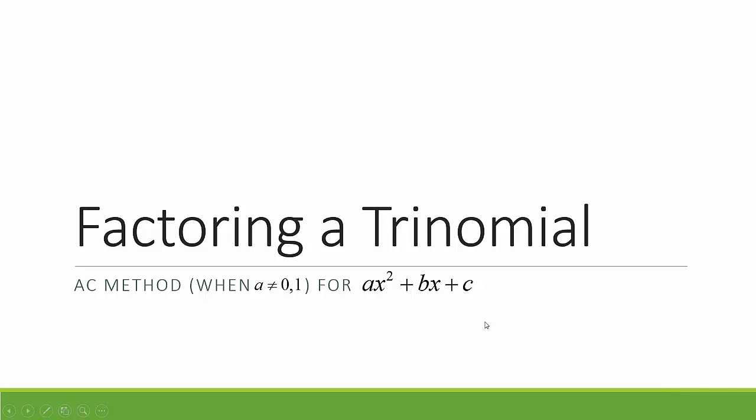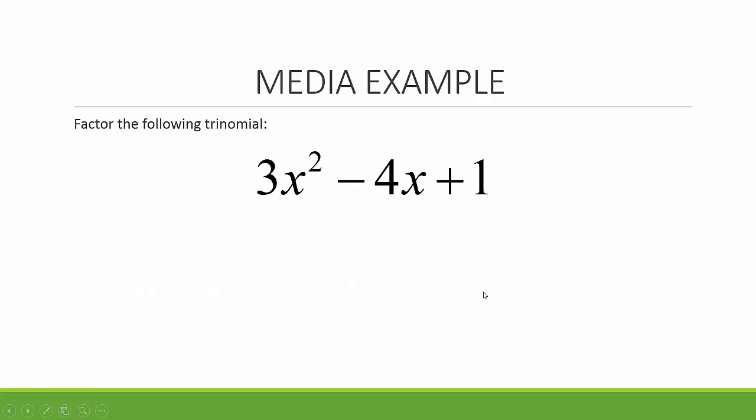Today we want to factor a trinomial using the AC method when a is not equal to 1, for ax squared plus bx plus c. Factor the following trinomial: 3x squared minus 4x plus 1.